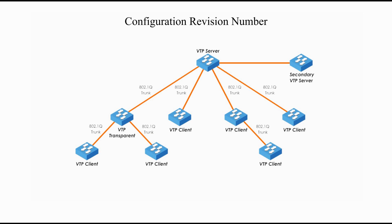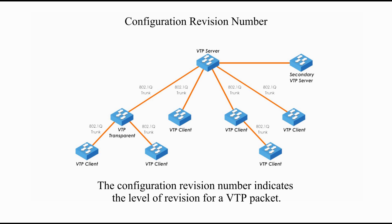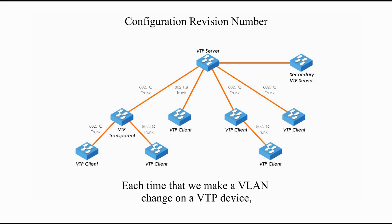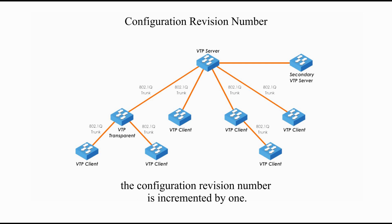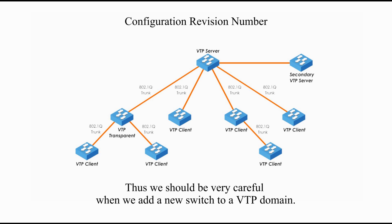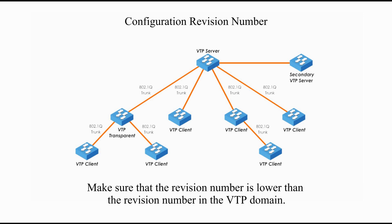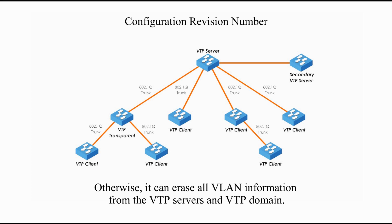Let's talk about another concept: the configuration revision number. The configuration revision number indicates the level of revision for a VTP packet. This information is used to determine whether the received message is more recent than the current version. Each time we make a VLAN change on a VTP device, the configuration revision number is incremented by one. Thus, we should be very careful when adding a new switch to a VTP domain. Keep in mind, Cisco switches are by default VTP servers. Make sure that its VTP configuration revision number is lower than the revision number in the VTP domain, otherwise it can erase all VLAN information from VTP servers and the VTP domain.